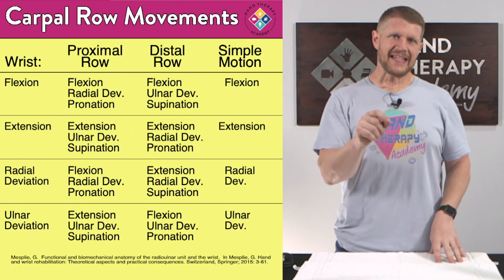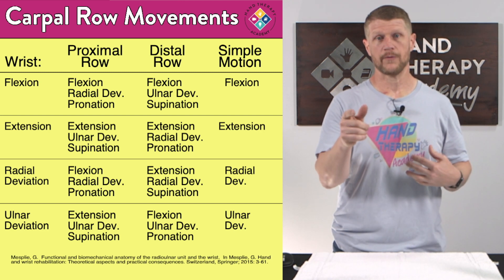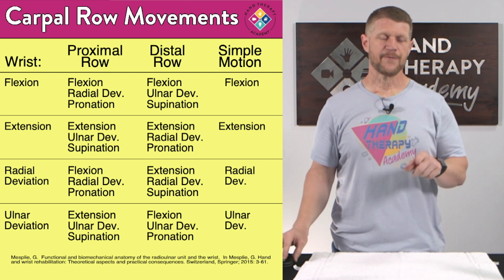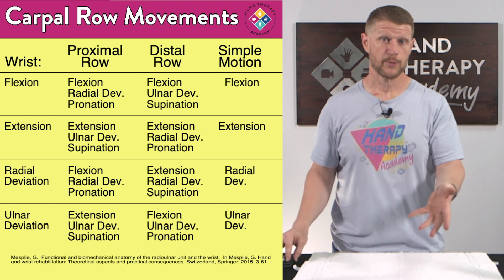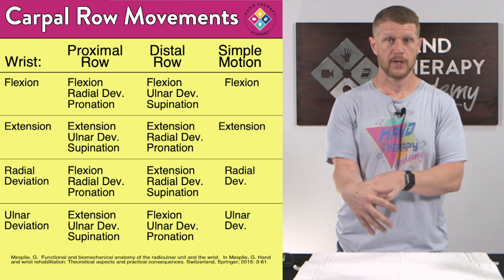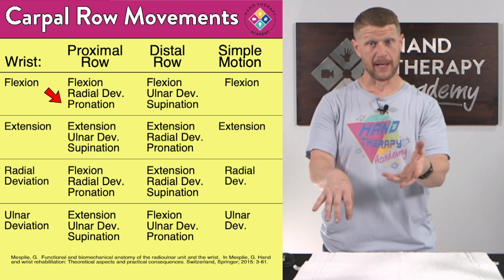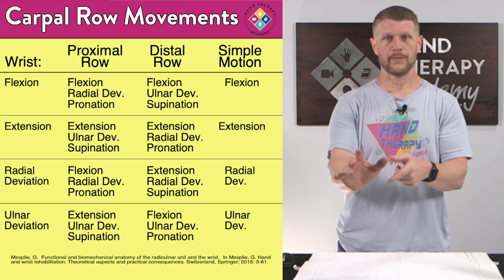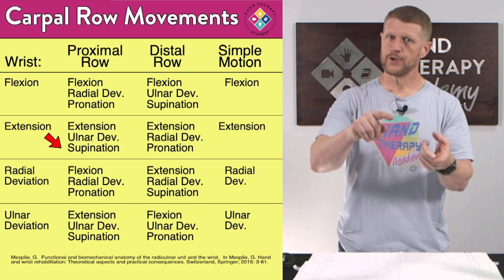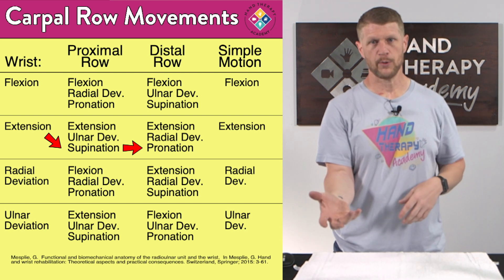The scaphoid is the key element for understanding all of these movements. It gives us a window into pronation and supination as well. During wrist flexion, the scaphoid pronates — that's what's supposed to happen. During wrist extension, the scaphoid extends and supinates. The distal row always does the opposite: if the proximal row supinates, the distal row pronates.